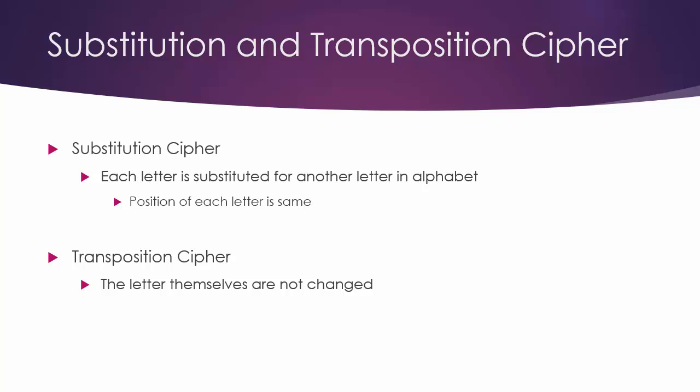Substitution ciphers can be compared with transposition ciphers. In a transposition cipher the units of the plaintext are rearranged in a different and usually quite complex order, but the units themselves are left unchanged. By contrast, in a substitution cipher the units of the plaintext are retained in the same sequence in the ciphertext, but the units themselves are altered. Let me show you exactly how they work.